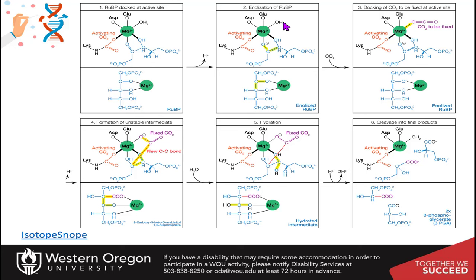The carbon dioxide bumps out that water molecule. Still in the enolized state, the double bond from the enol is going to attack the carbon dioxide, forming the link with that carbon dioxide — fixing it and forming this new carbon-carbon bond.